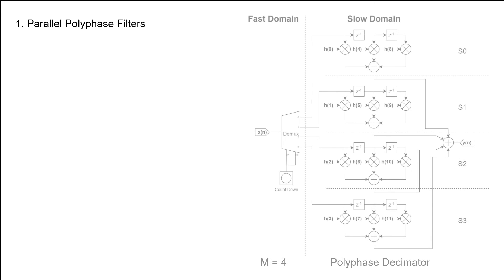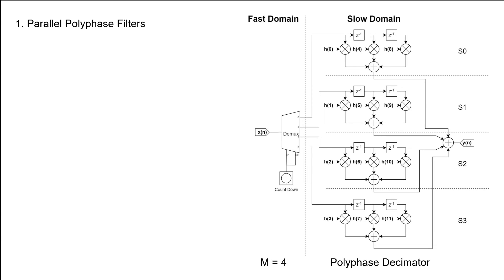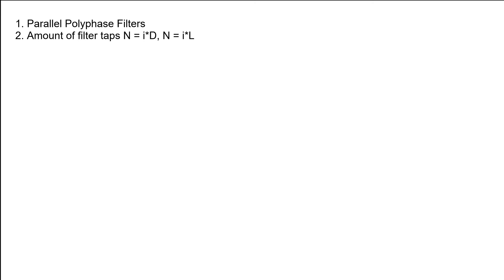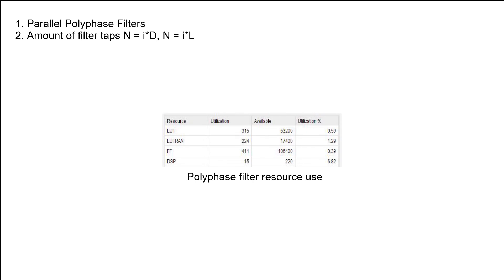The polyphase filter structure implemented in this video was based on the assumption that the data in the fast domain can be handled in series. In some applications where the fast sampling rate is too high, it's possible to handle the data in parallel — this is where the initially described polyphase filter would come into play. The filter can be adopted by removing the multiplexers since the data would already be organized in frames, and the frame rate would equal the slow sampling rate. One thing to keep in mind is that the number of filter coefficients should be an integer multiple of the sampling conversion factor. In this design, I used a coefficient set with 120 taps, and since the conversion factor is 8, the filter uses only 15 multipliers.